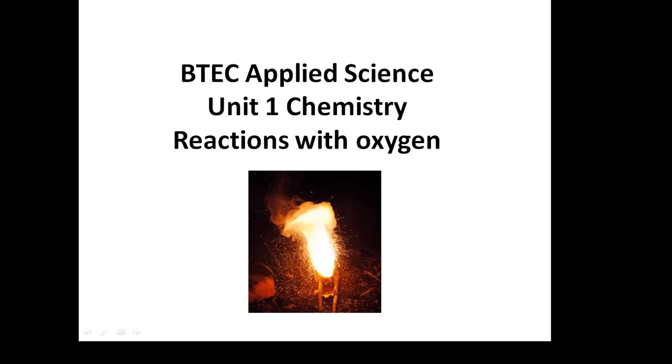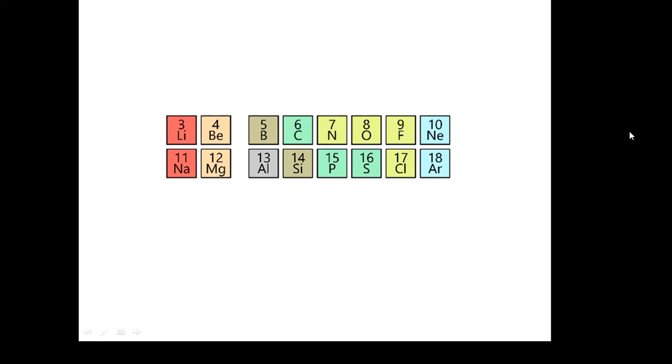BTEC applied science unit one chemistry reactions with oxygen. Basically looking at the reactions of elements in periods two and three with oxygen. So here are periods two and three, these are the ones that we need to worry about.